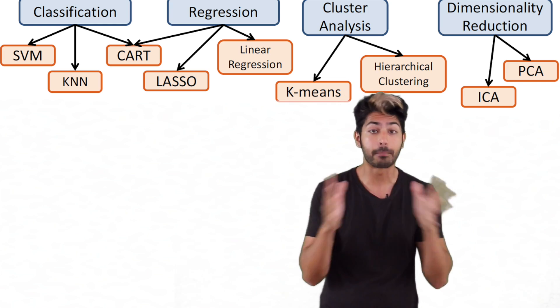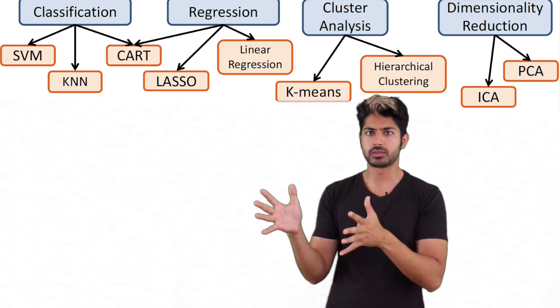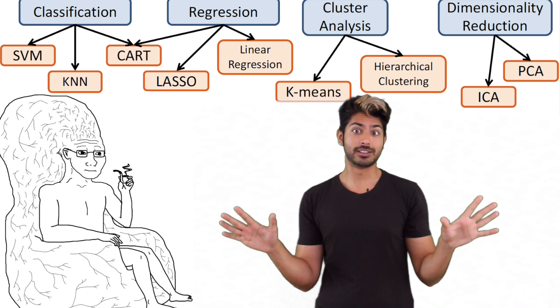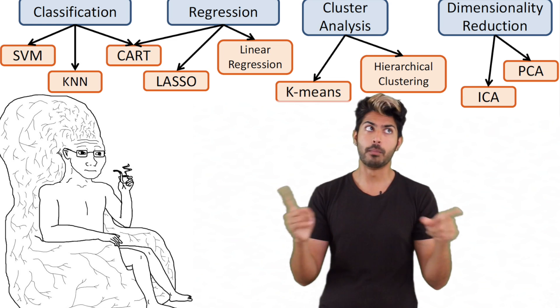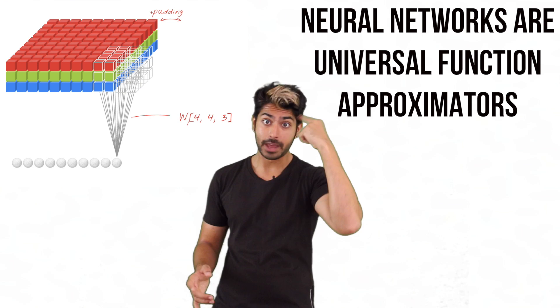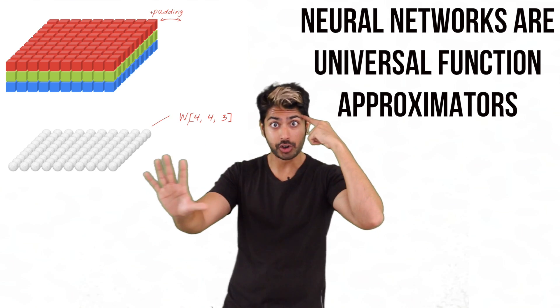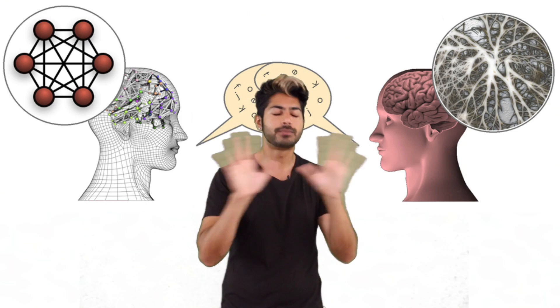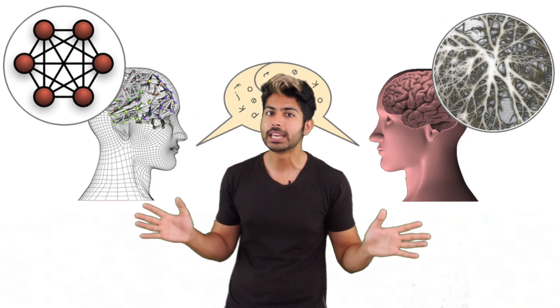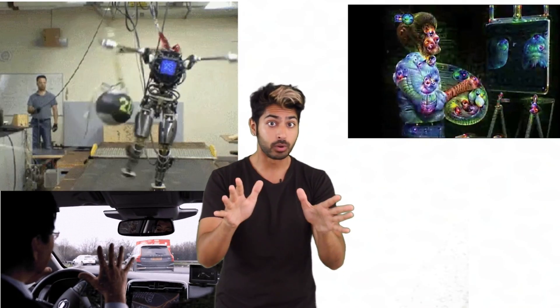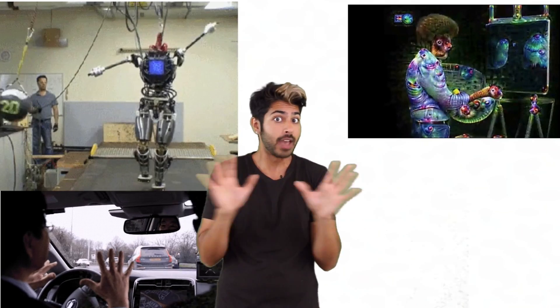We have different models for approximating different functions, but humans can approximate almost any function, so wouldn't it make sense to model our own capability? Neural networks inspired by the brain are universal function approximators, that means they can learn any function. Although silicon is a very different medium than the chemical soup in our head, they're still able to replicate much of what we do like nothing else we've ever created.